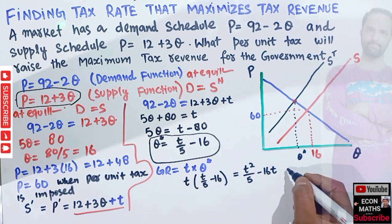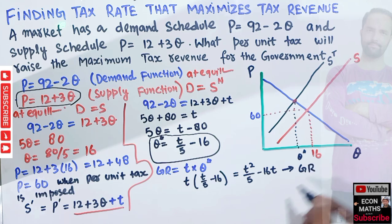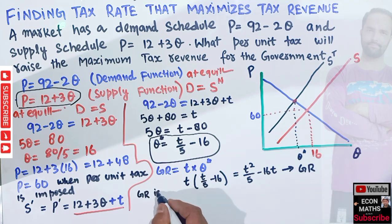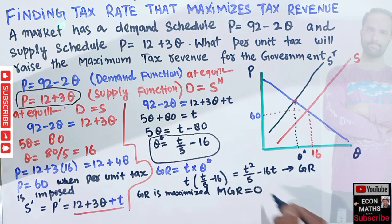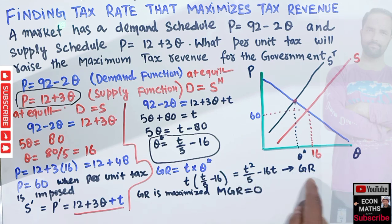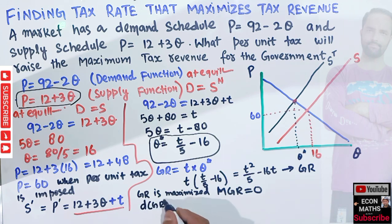Government revenue is maximized when the marginal government revenue equals zero. This means we take the derivative of the government revenue function with respect to t and set it equal to zero: dGR/dt = 0.